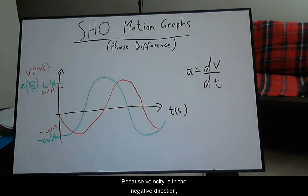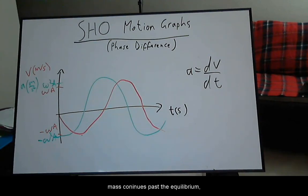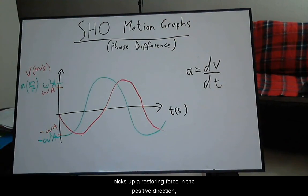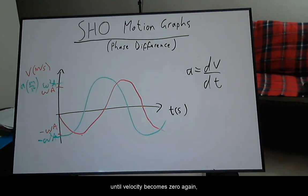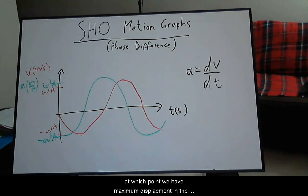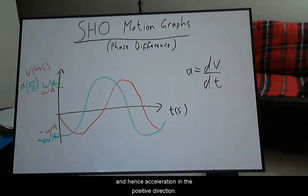Because velocity is in the negative direction, the mass continues past the equilibrium and picks up a restoring force in the positive direction and hence acceleration, which slows the velocity until velocity becomes zero again. At which point we have maximum displacement in the negative direction and maximum restoring force and hence acceleration in the positive direction.